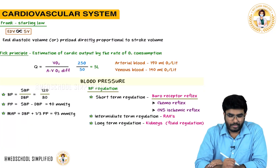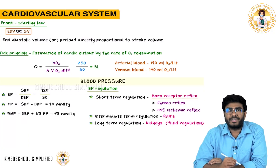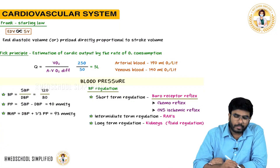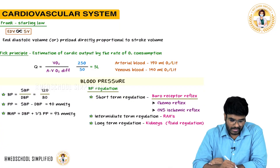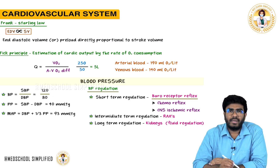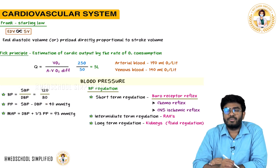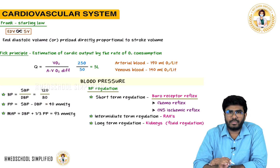Welcome back. In this video let's discuss blood pressure. Normal blood pressure is systolic by diastolic, that is 120 by 80. 120 is the pressure in the blood vessels during systole and 80 is the blood pressure during diastole. So systolic by diastolic blood pressure is 120 by 80 mmHg.